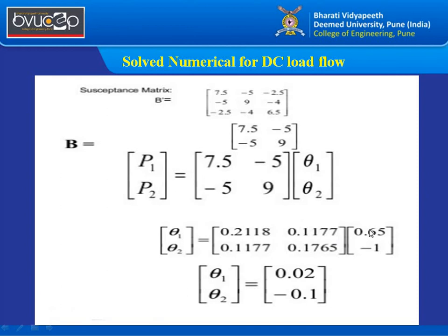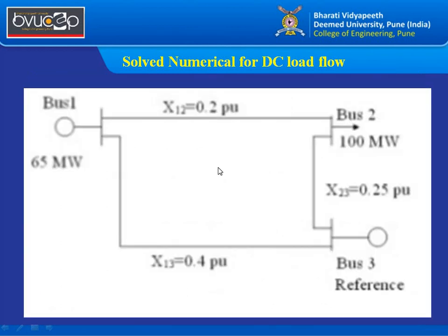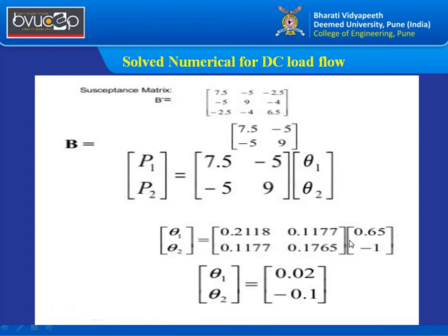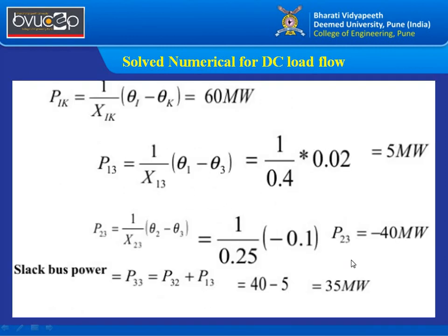The Bx inverse values are obtained from inverting [7.5, −5; −5, 9]. With P = [0.65, −1.0]ᵀ, we compute θ1 (positive) and θ2 (negative). Note that the load is negative because power is going away from the system. Using these angles and the reactance values, the power flow P1K between buses can be calculated — for example, the power flow between buses 1 and 3, between buses 2 and 3, and the slack bus power can all be determined from Pij = (θi − θj)/Xij.